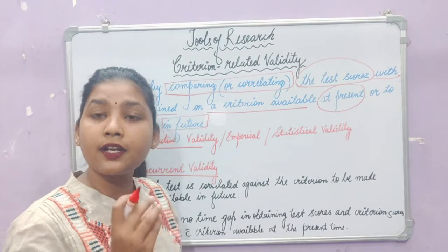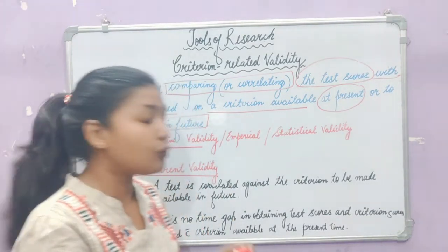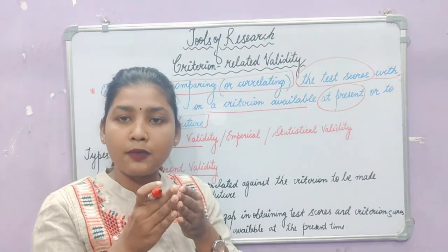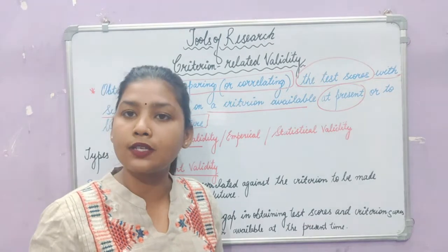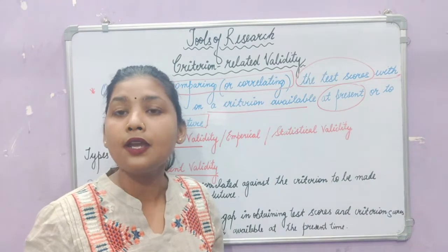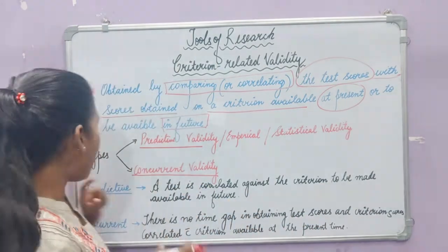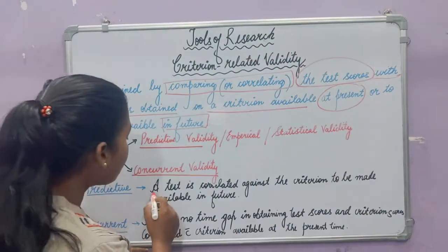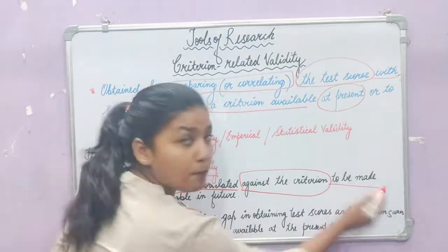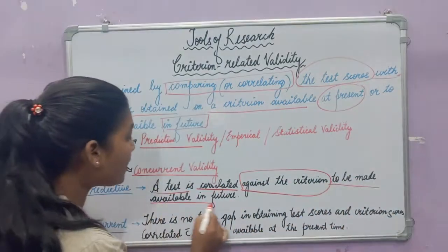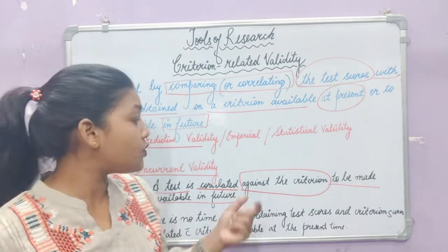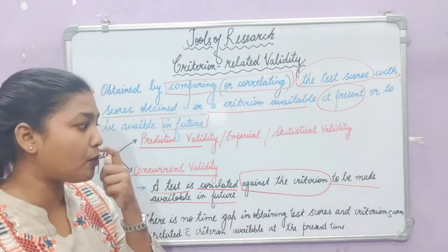What is predictive validity? When you understand the meaning of the word, the concept is also very easy to understand. A test is correlated against the criterion to be made available in the future. Let me give you an example: you have made an intelligence test.